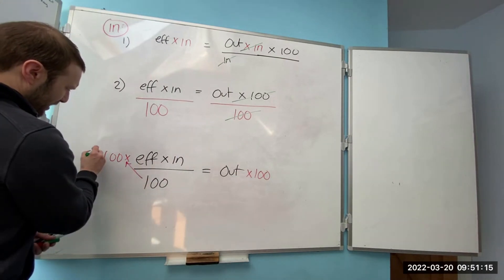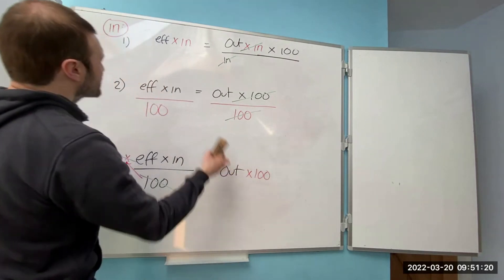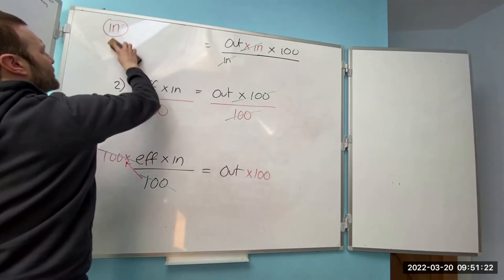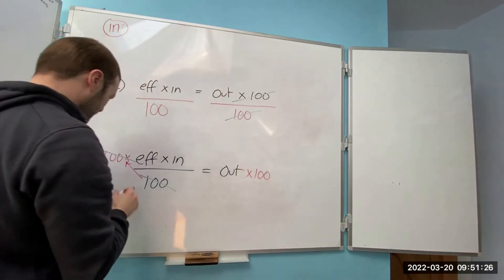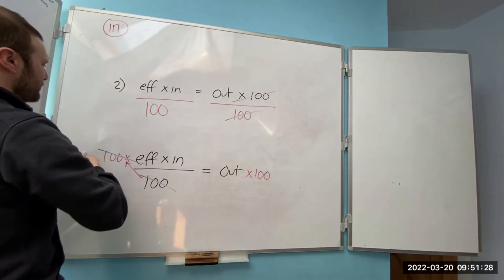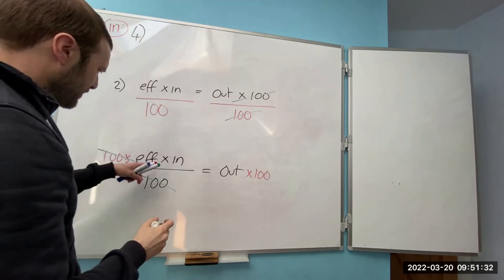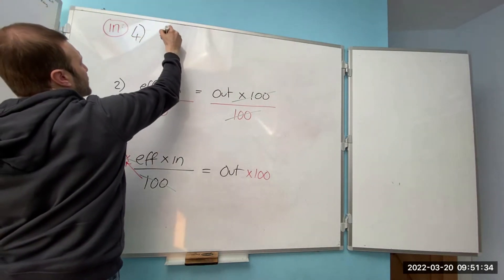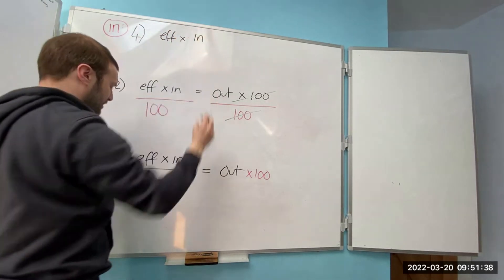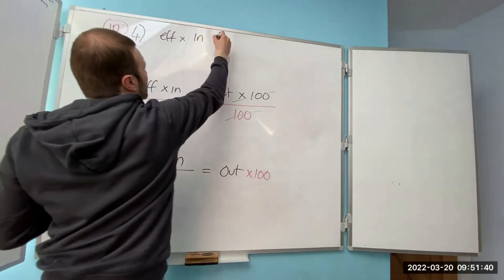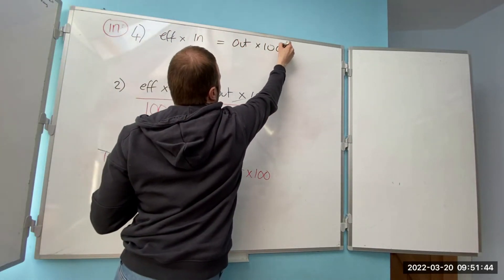I've got everything on the top line, just to make it look neat so I can follow my steps and so you can follow them too. I'm going to put this up here. So that's step three. Step four is cleaning this up. We've got efficiency times input equals output times 100.